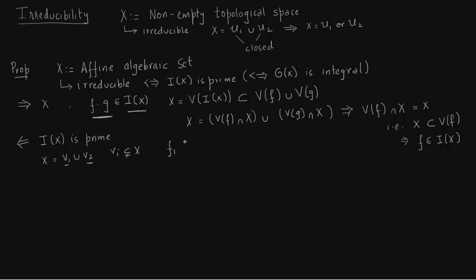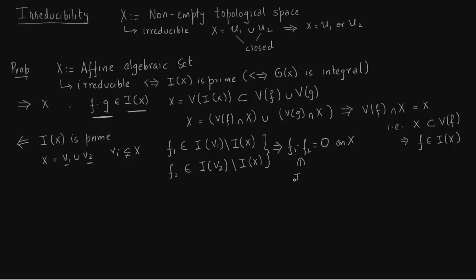Consider two polynomials. Since V1 is contained in X, applying the ideal gives the reverse inclusion: I(V1) contains I(X). So we can find polynomials F1 and F2 lying in I(V1) and I(V2) respectively, but not in I(X). Since V1 and V2 cover X, either F1 or F2 vanishes on all of X, so F1 times F2 belongs to I(X). But this is a contradiction: I(X) is prime, yet F1 and F2 individually do not lie in I(X) while their product does.